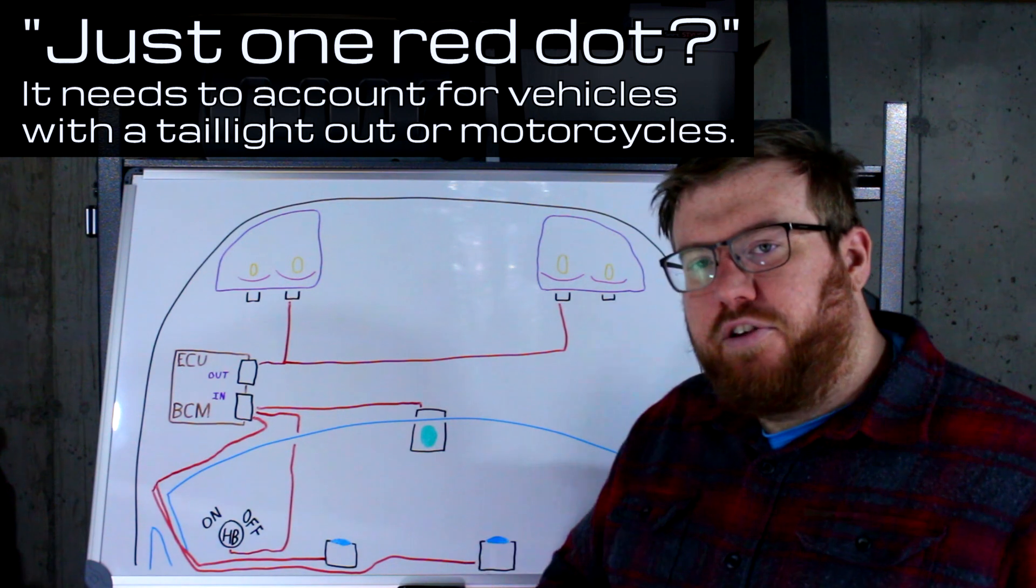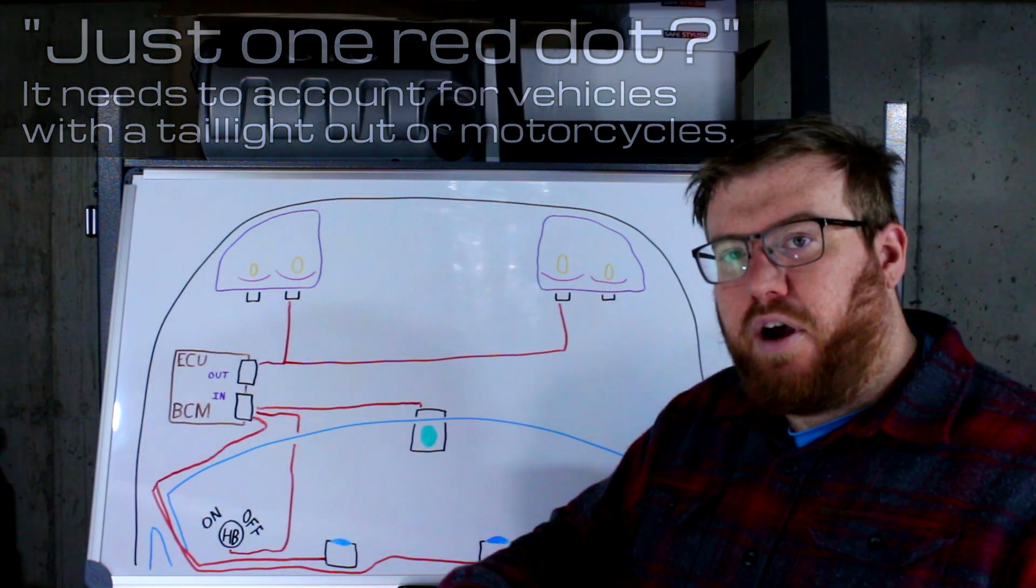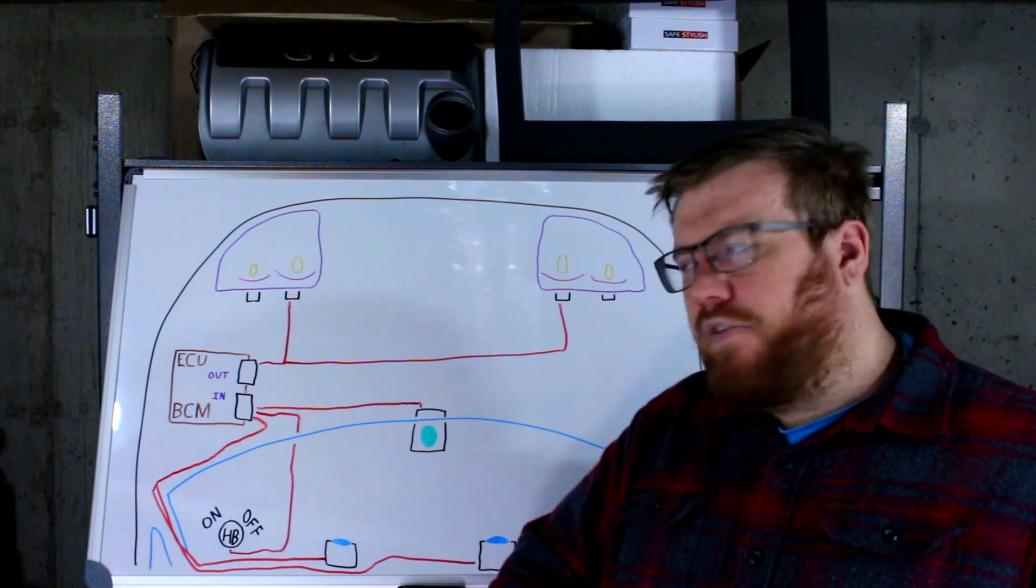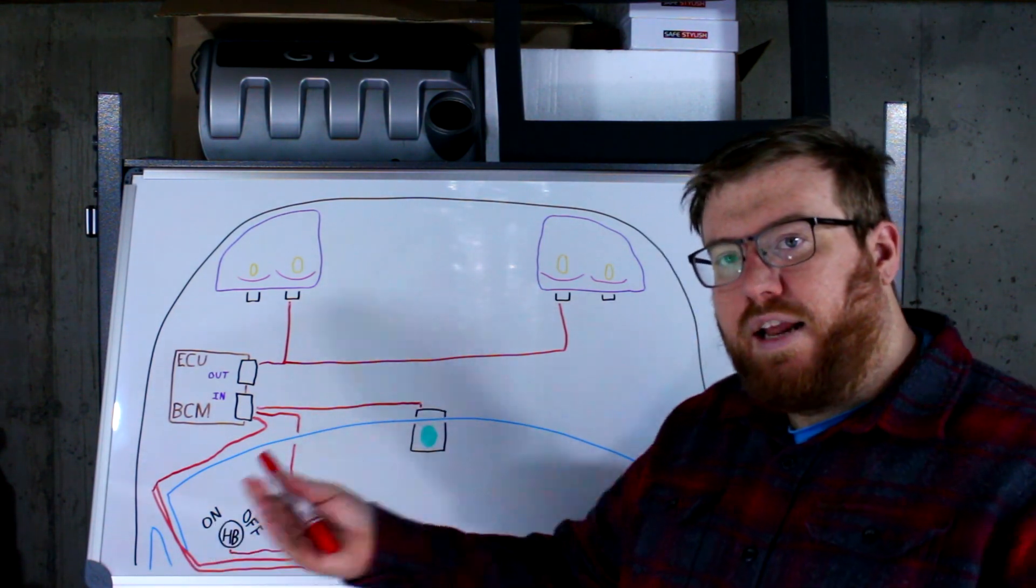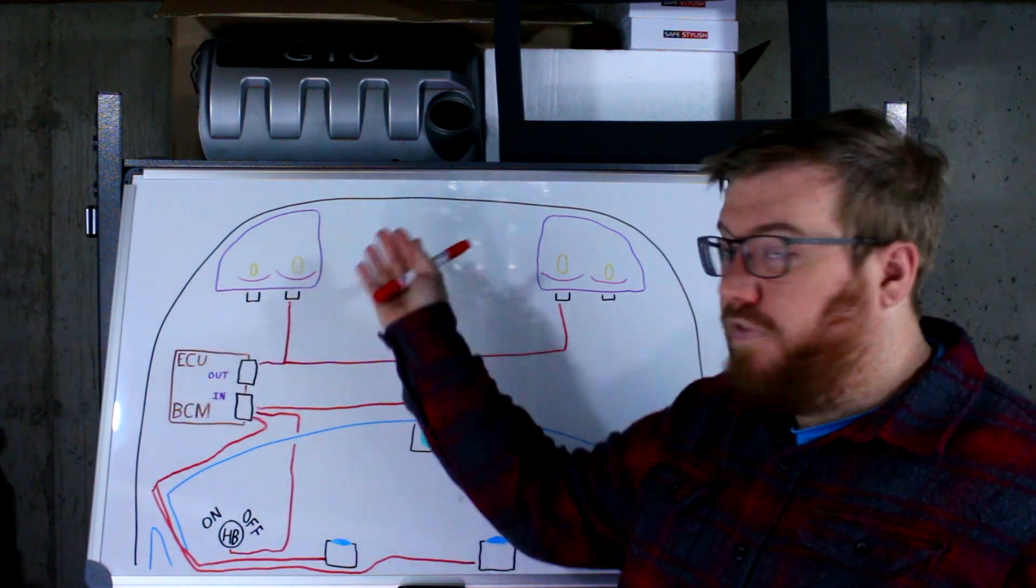If it sees a bright red dot or two, then it knows, hey there's probably a car in front of us, let's turn the high beams off so we're not blinding them. Same goes for if there's a bright white light ahead and it's getting closer, getting brighter, it knows, hey there's a car coming, we need to shut off those high beams.